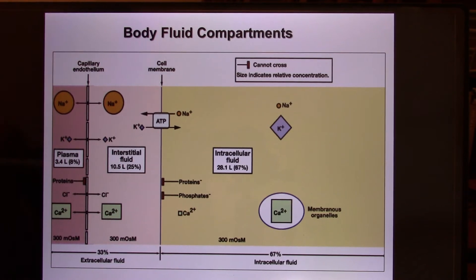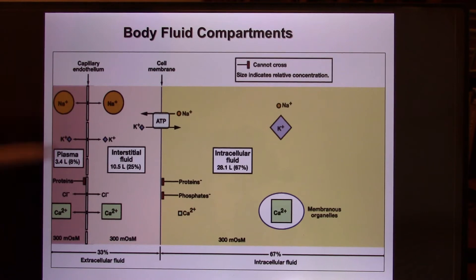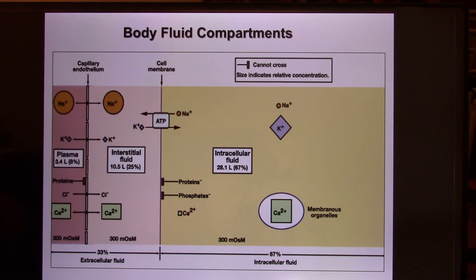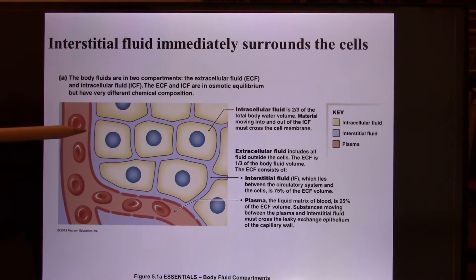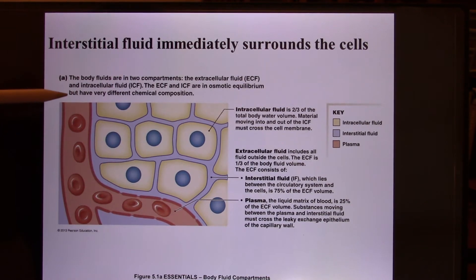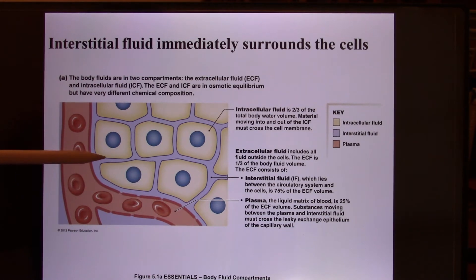Today let's focus on the fluid part. In the ECF, about a quarter stays in your blood — that's the plasma. When we do the calculation, we find about 8% stays in plasma, and the other portion is the interstitial fluid — the body fluid that stays between the cells. That shows your body: inside the cell is the ICF, and the plasma and interstitial fluid make up the ECF.